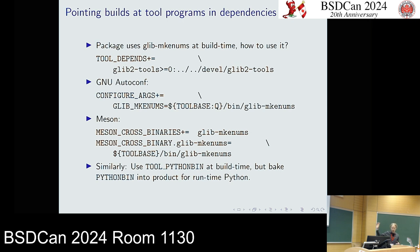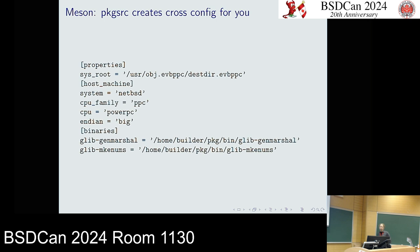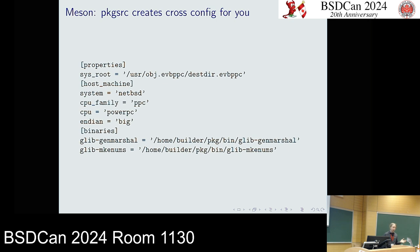For CMake, Meson, or whatever — pkgsrc will create a cross config file for you. This is an example pulled from GTK2 or something else using it; it's just generated for you. You don't have to mess with it yourself — it'll create it as needed according to the packages, so you don't have to maintain a library of your Meson config files or anything.